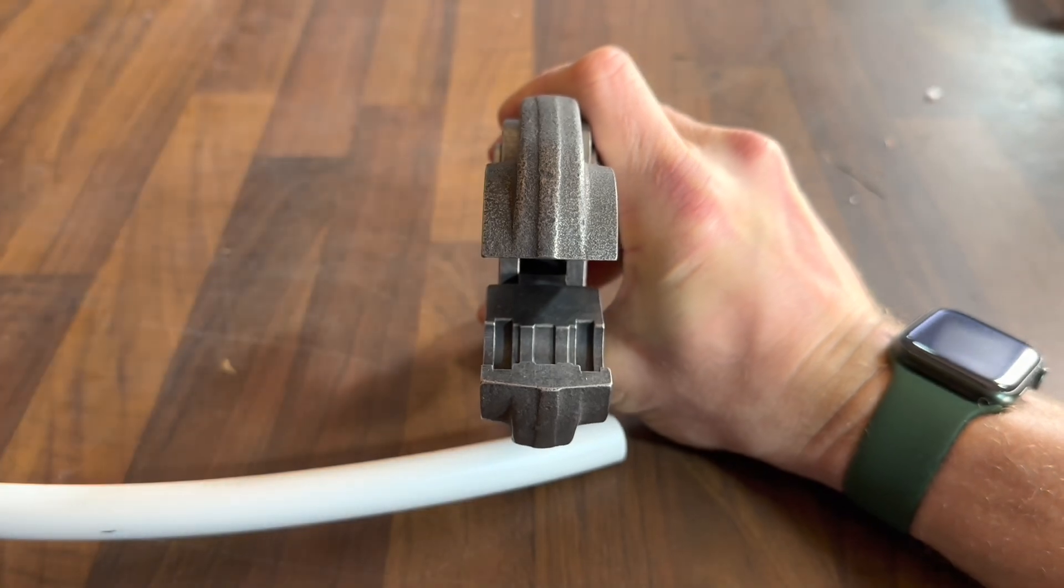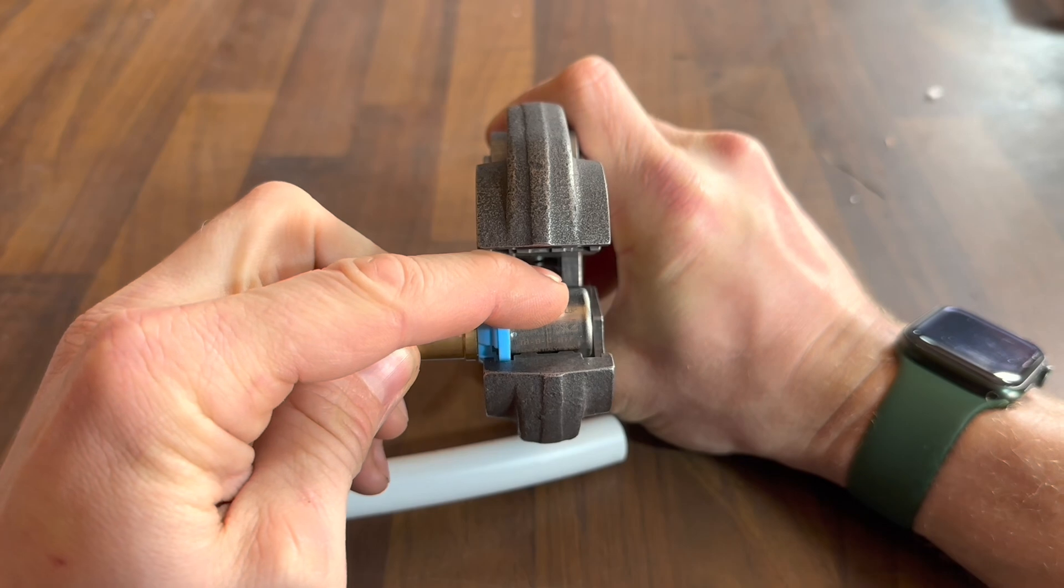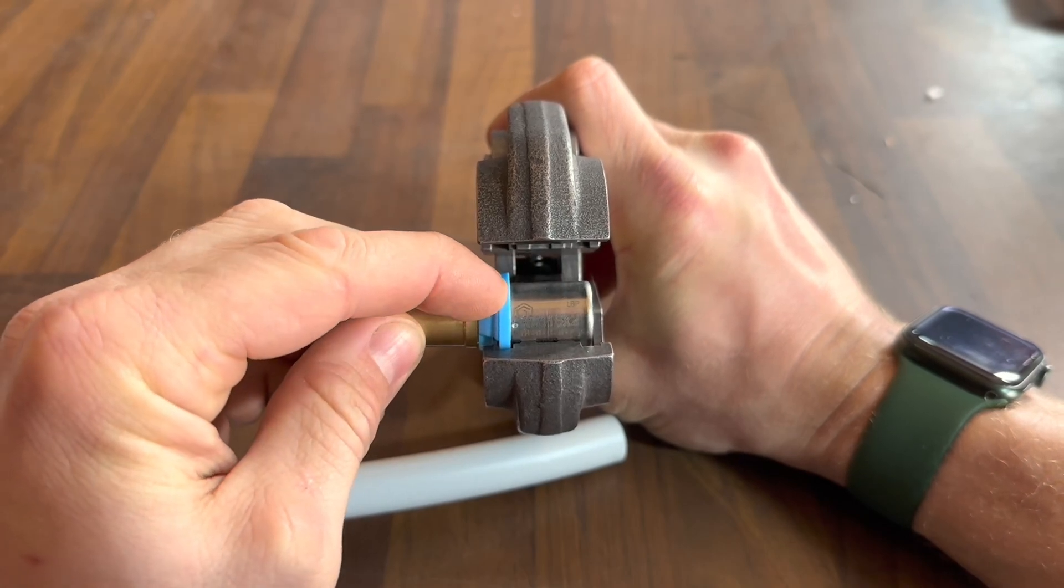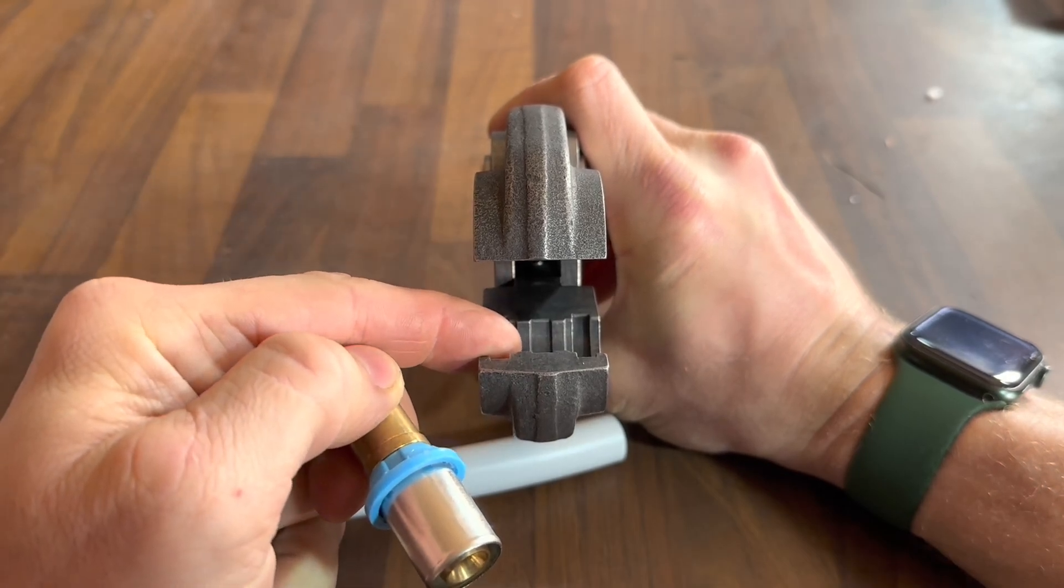So if I pop the fitting back together like that it crimps or crushes the outside metal layer onto the outside of the pipe and then the inside crimps around the o-rings.